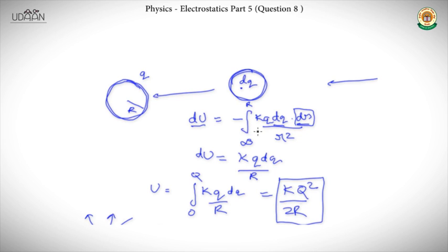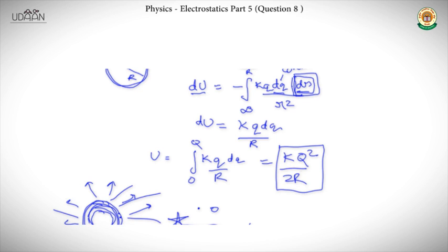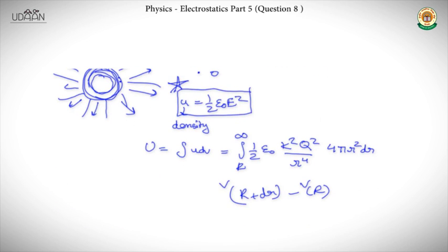The small increment in self-potential energy equals minus the integration of kq·dq·dr/r² from infinity to R. Here kq·dq/r² is the force, so F·dr is the work. Therefore du = kq·dq/R. Integrating from 0 to Q gives U = kq²/2R.